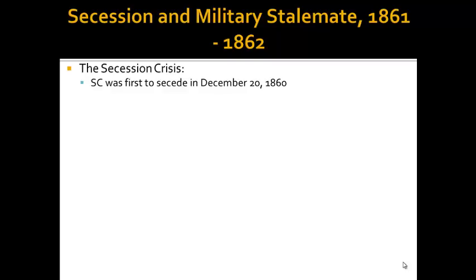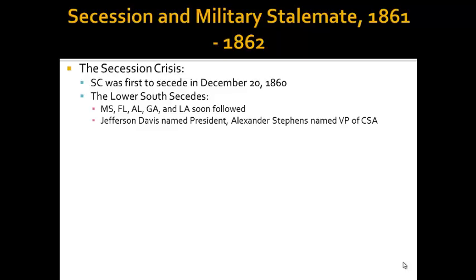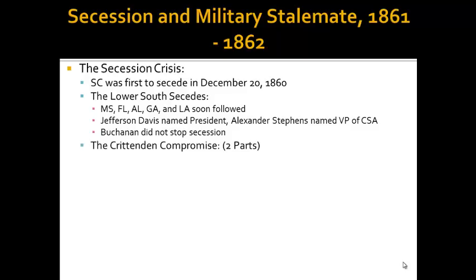The secession crisis begins on December 20th of 1860. South Carolina is the first state to secede from the Union. Shortly after, we have other states that follow, including Mississippi, Florida, Alabama, Georgia, and Louisiana. Jefferson Davis was named the president of the Confederate States of America, and Alexander Stevens was named his vice president. All this is happening while Buchanan is president, and he did not stop secession. He felt that the president did not have the power to do that.